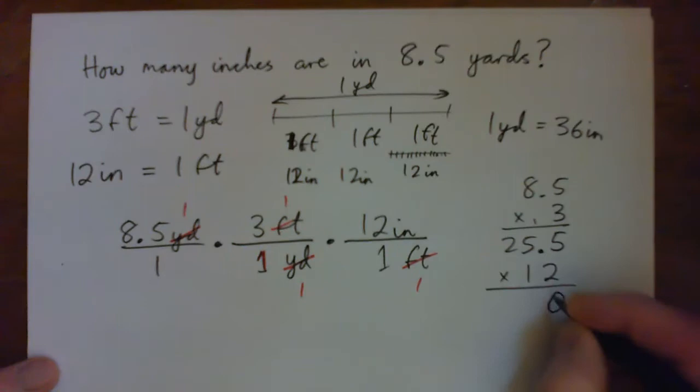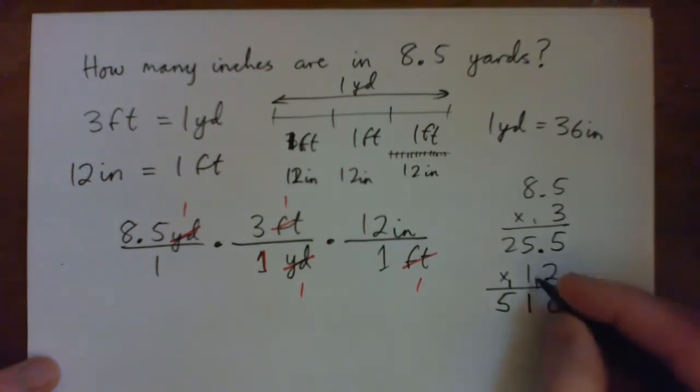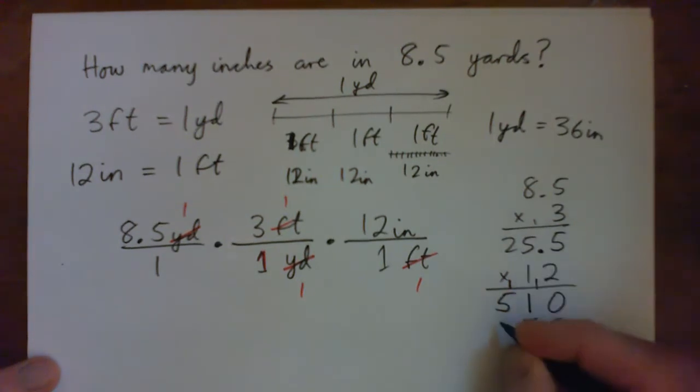And then times 12. Two fives is 10, carry one, two fives is 10 and one is 11, carry one, two times two is four and one is five. Put down a zero and multiply by one. One times five is five, one times five is five, one times two is two.